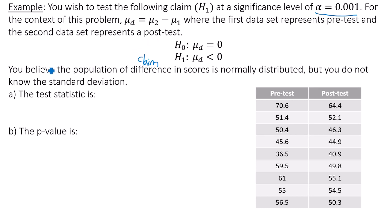Now, some legal requirements to use the matched pairs method: you believe the population of difference in scores is normally distributed, but you do not know the standard deviation. We need to find the test statistic, the p-value, compare it to alpha, then come to a conclusion based on our hypotheses.